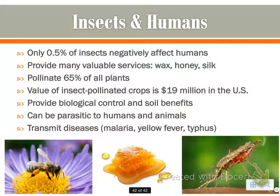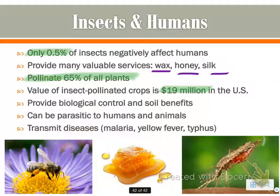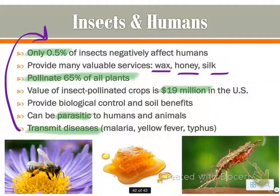Insects have a bad reputation with humans, but in reality only 0.5% of them negatively affect humans. They provide many valuable things: wax, honey, silk, and they pollinate 75% of all plants — the value in the US alone is $19 million of insect-pollinated crops. They also provide biological control and soil benefits. Yes, there are negatives — they can be parasitic and transmit diseases — but that traces back to only that 0.5% of insects that negatively affect us.